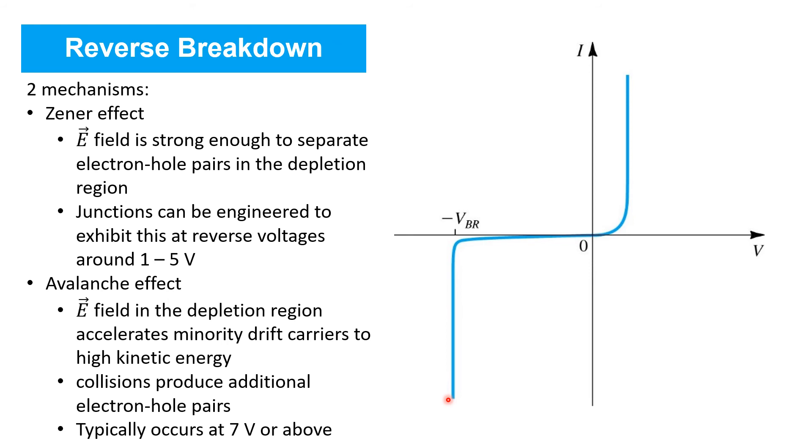There are two physical mechanisms that can give rise to reverse breakdown in PN junctions. One is the Zener effect. With such large reverse bias voltages in place, there will be a relatively strong electric field showing up in the depletion region of the PN junction. The Zener effect arises when the electric field there is strong enough to separate electron hole pairs in the depletion region. The resulting electron hole pairs are immediately swept to the terminals of the PN junction and show up as a reverse current.